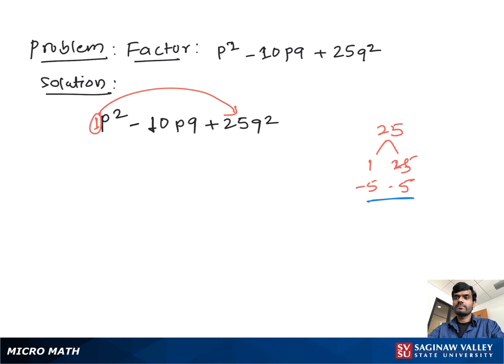We find the pair of numbers which when multiplied give us positive 25 and when added give us negative 10. That's negative 5 and negative 5.